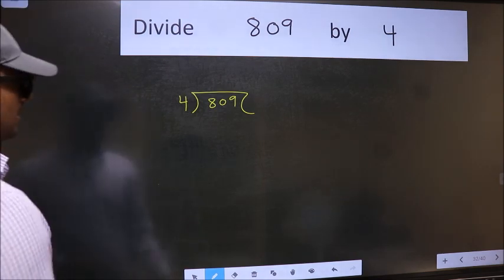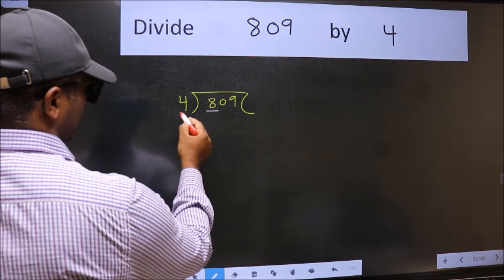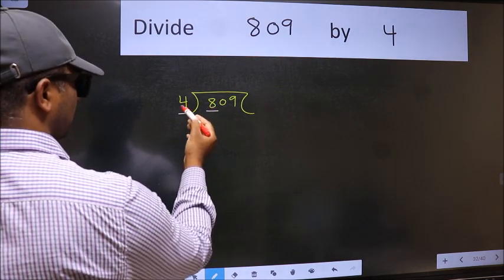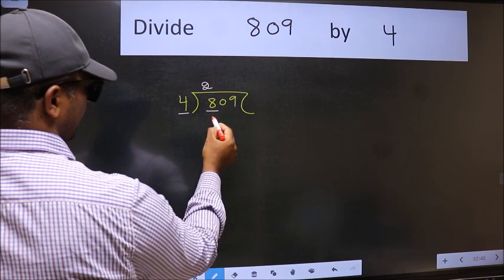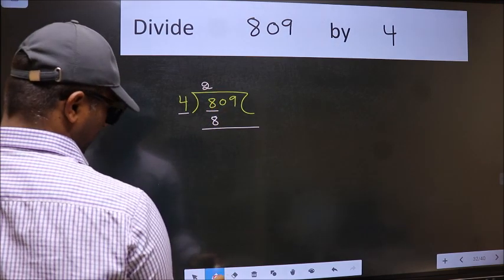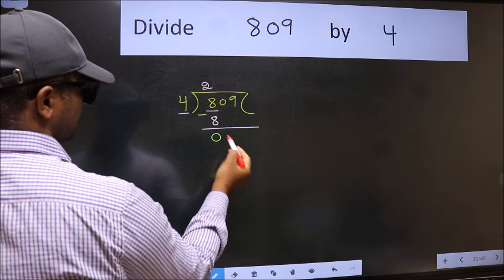Next. Here we have 8 and here 4. When do we get 8 in 4 table? 4 twos, 8. Now, we should subtract. We get 0.